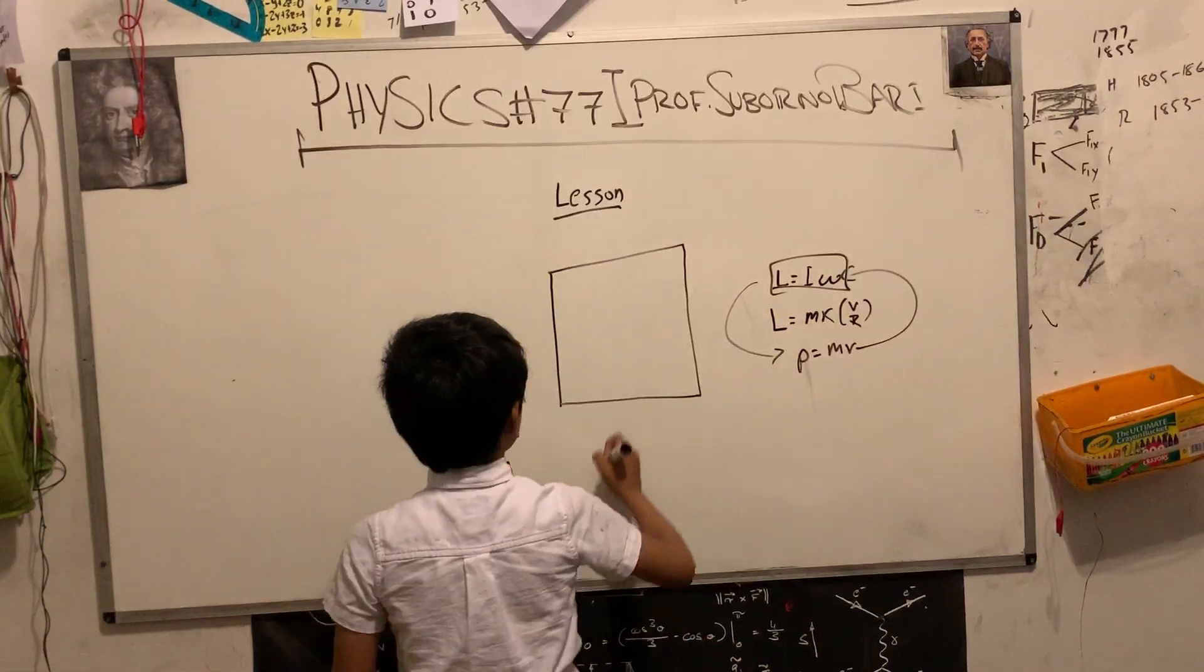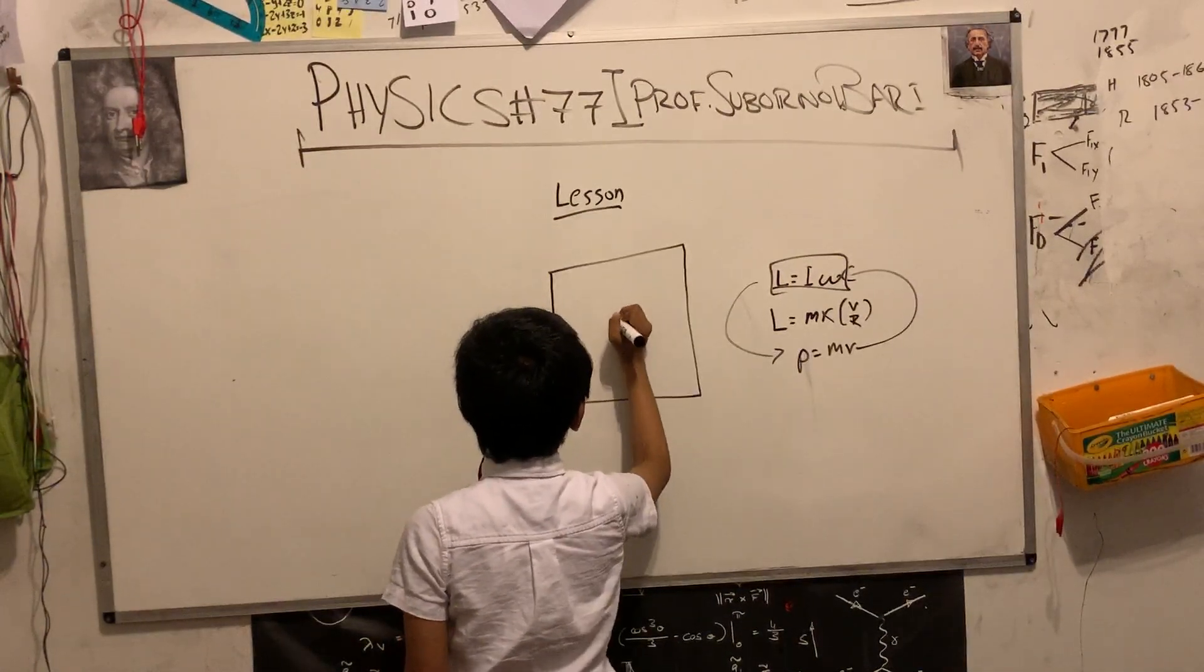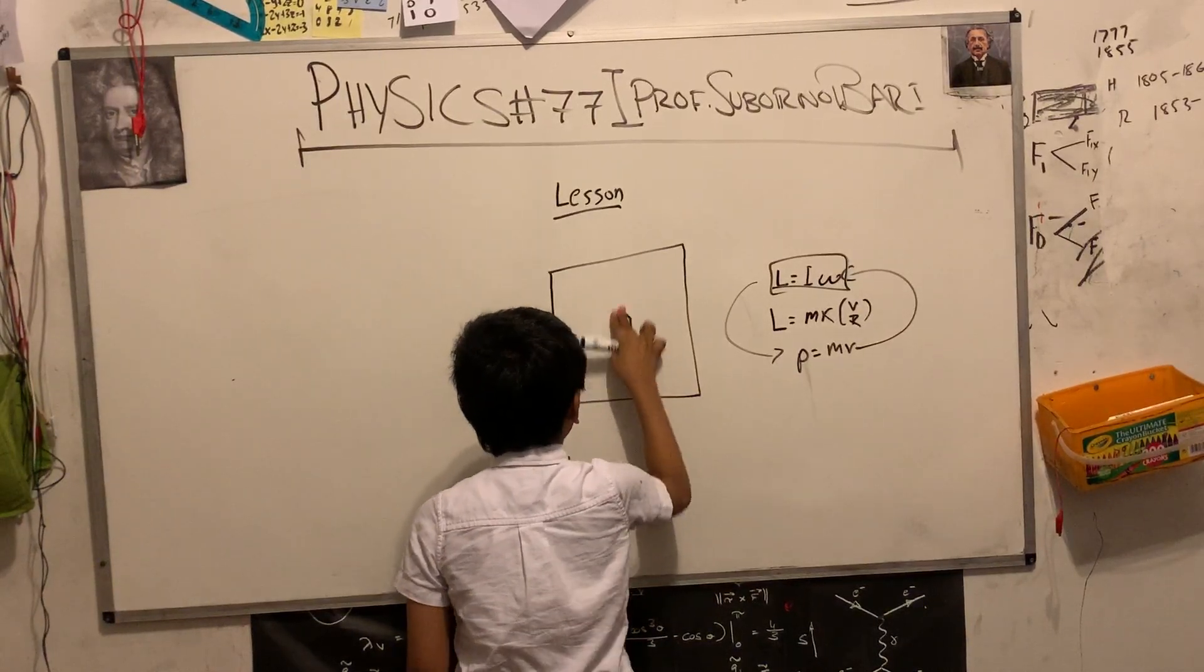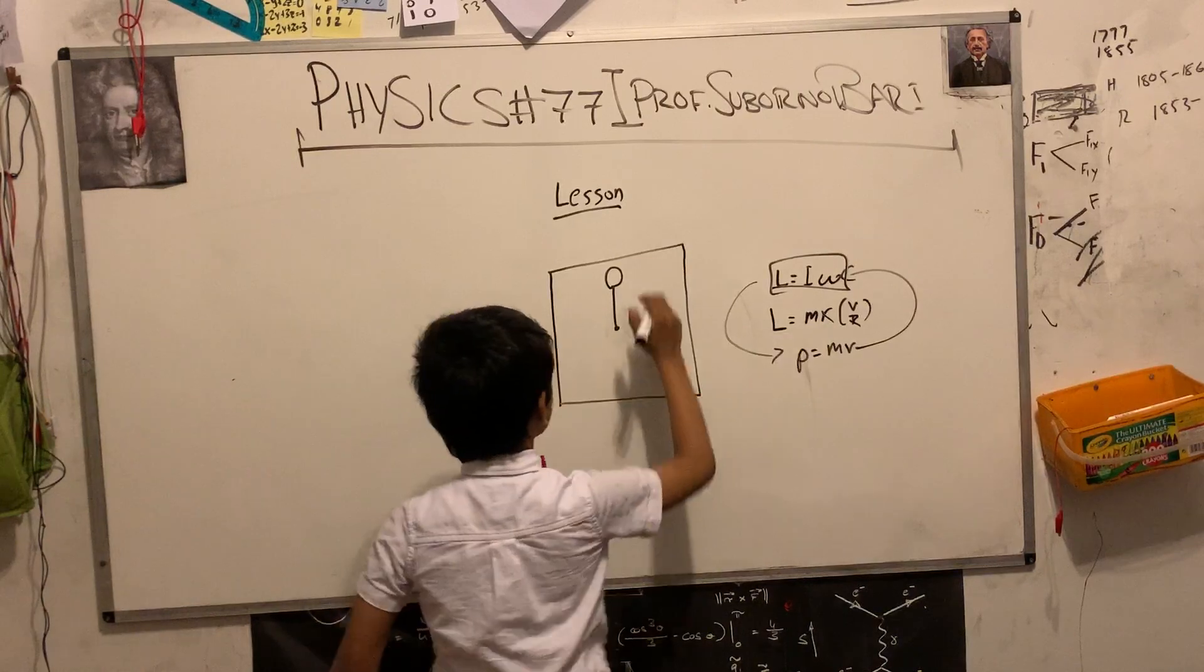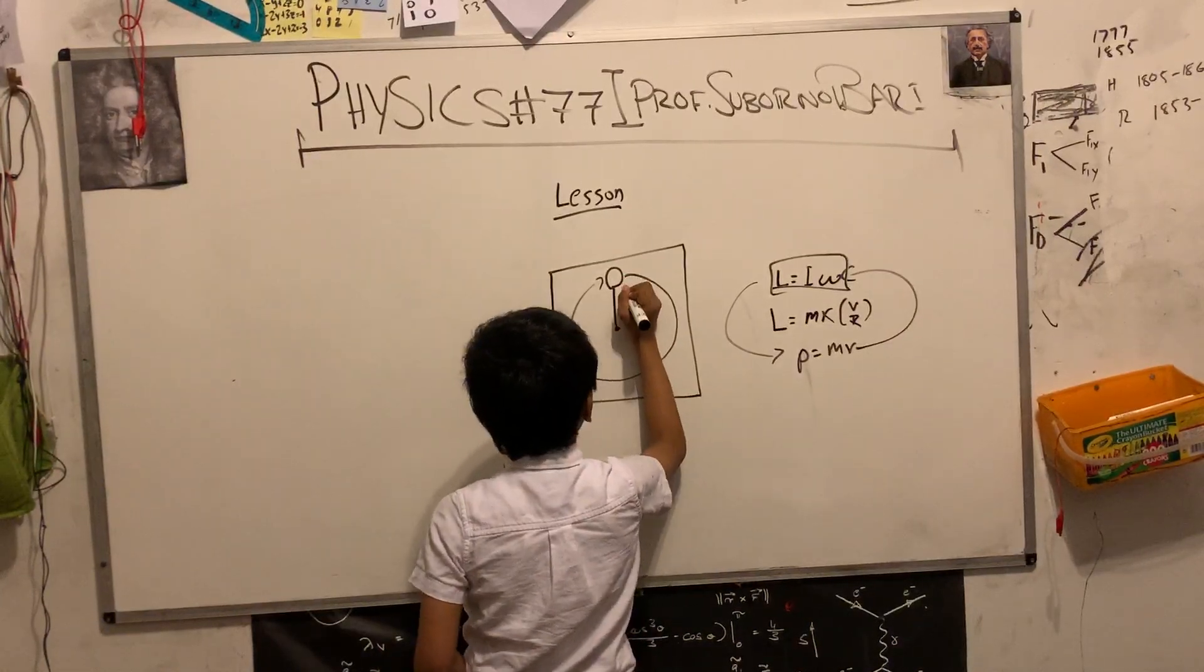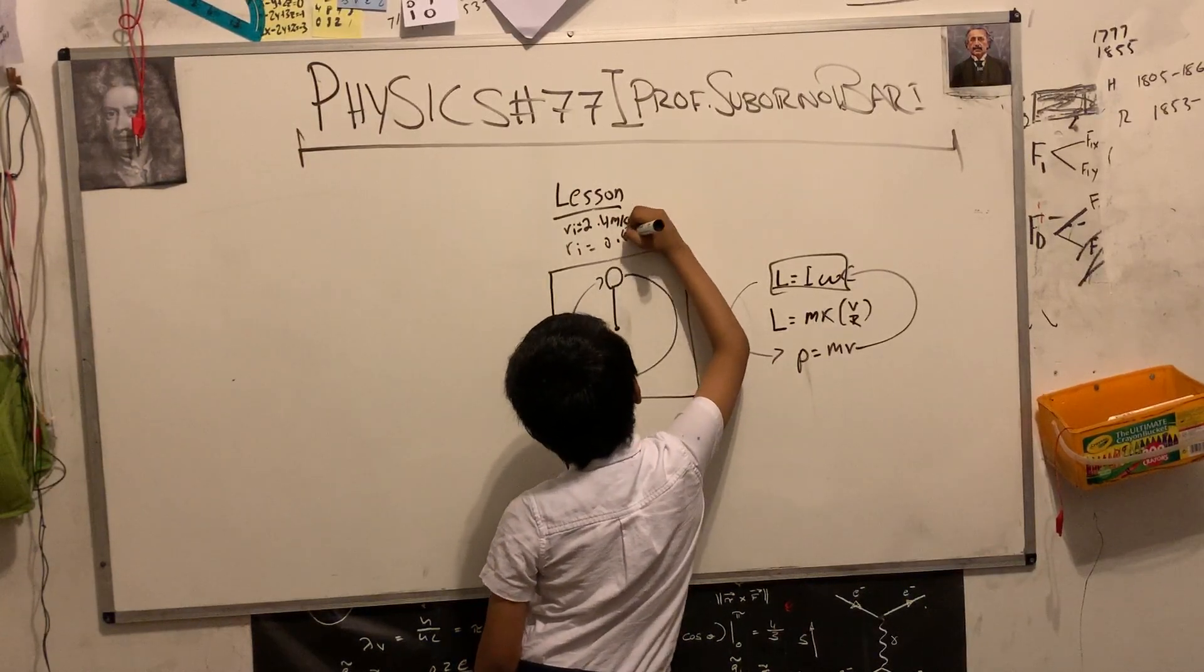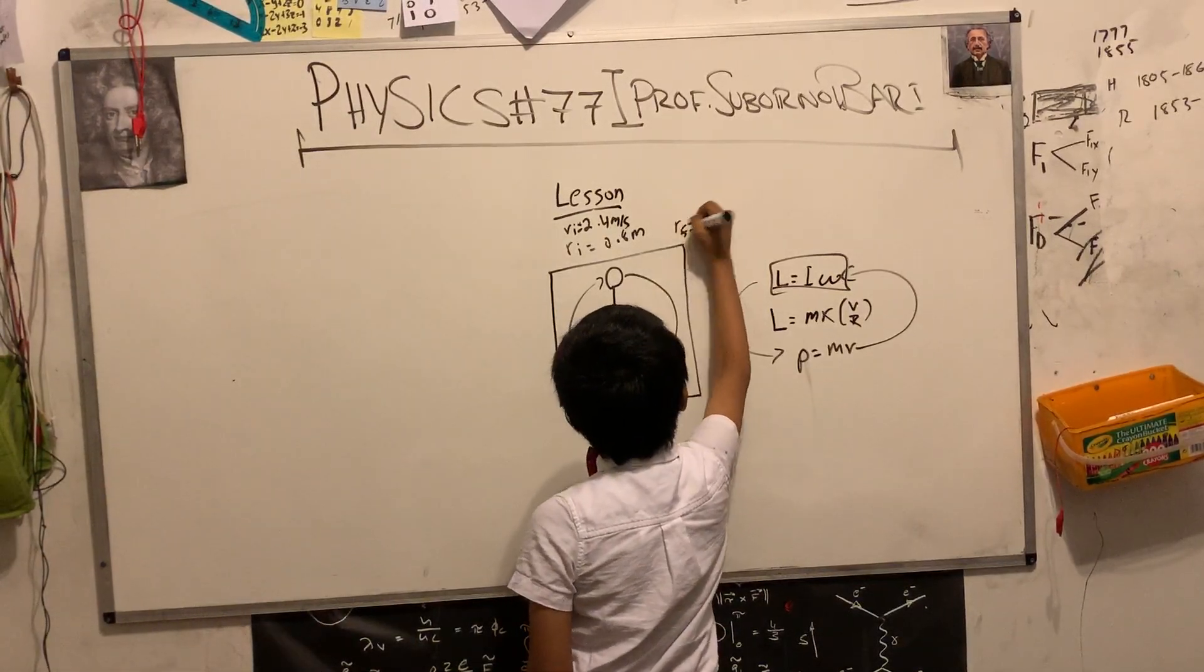And now, today for the problem, let's say that there is a table top. There is a smooth table top. We have a ball here rotating around. Initially, the ball is rotating at 2.4 meters per second and a circle of radius 0.8 meters. Now, if somebody pulls this ring in through the table, it will become 0.48 meters.